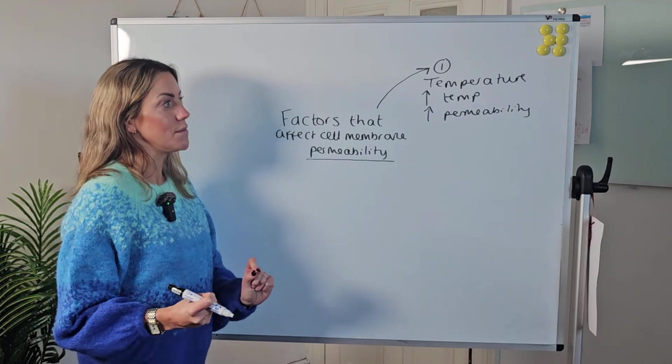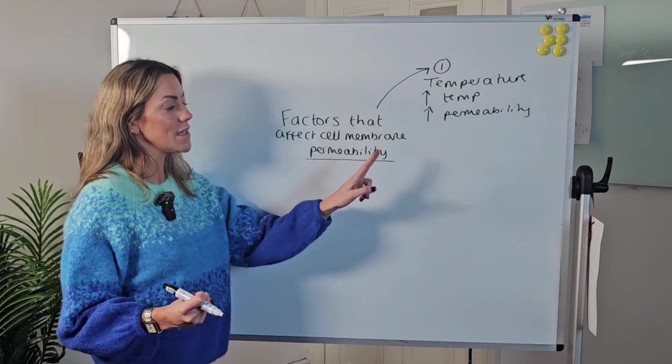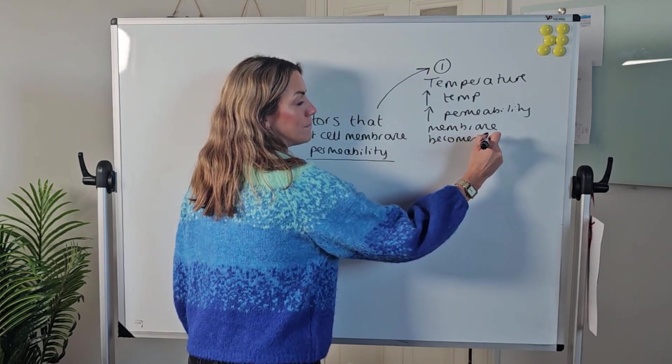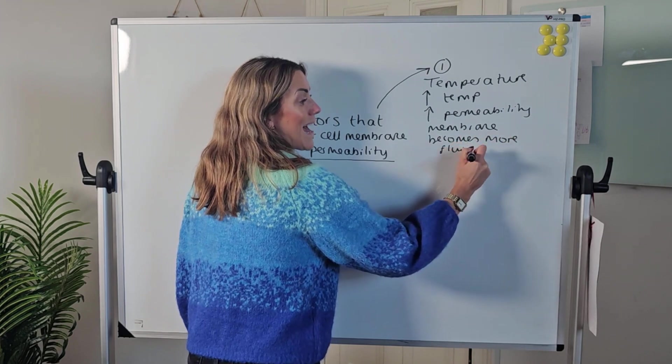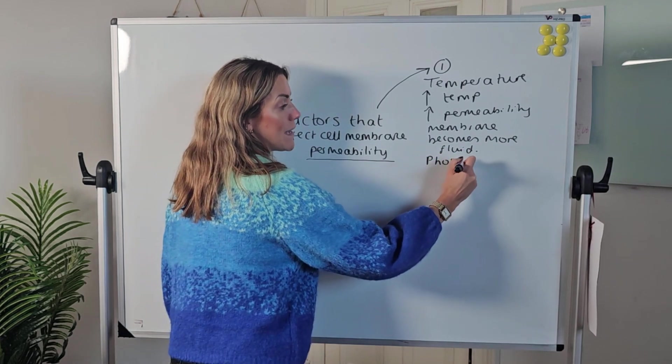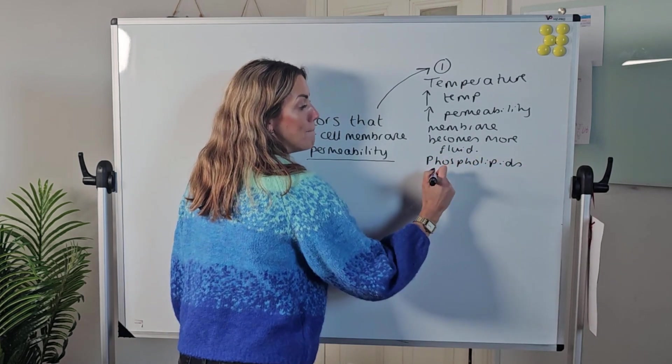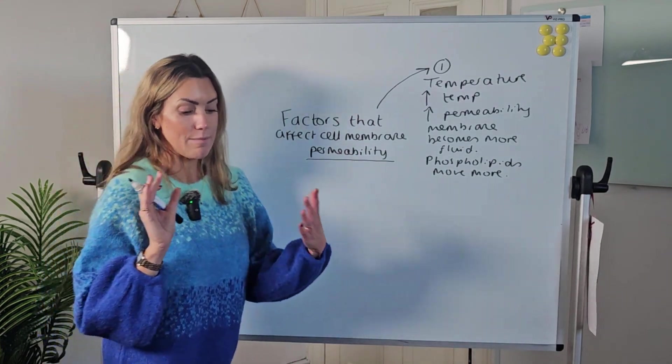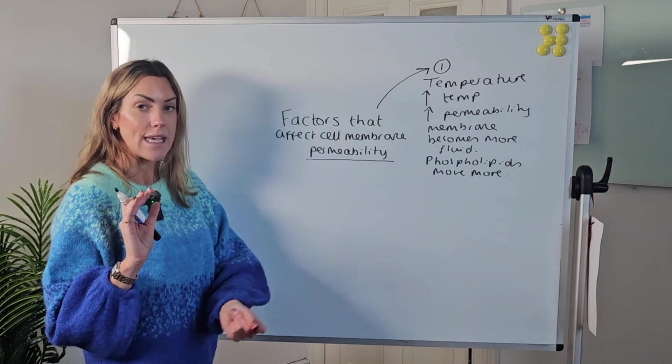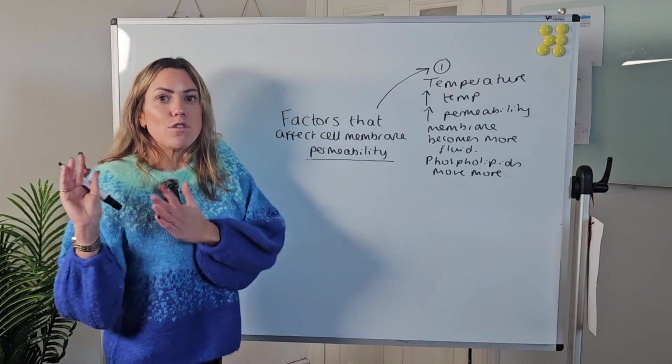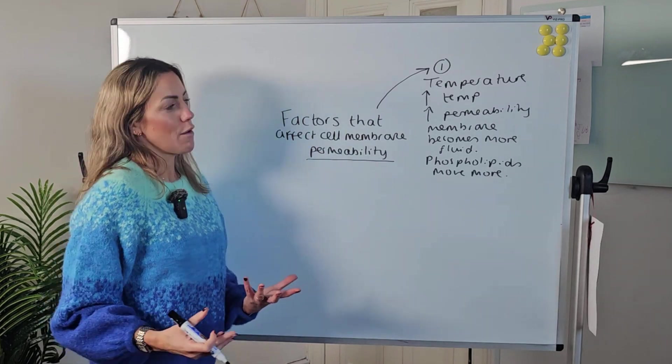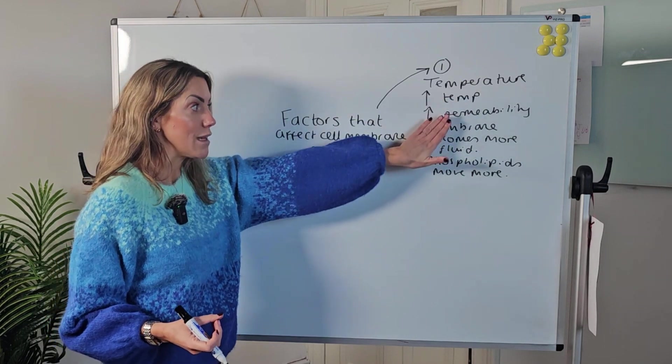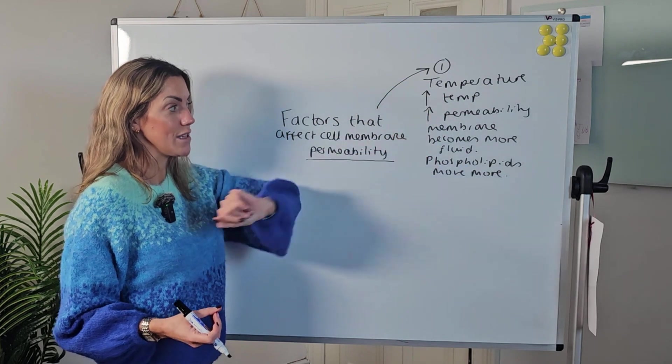If we increase the temperature, we increase the permeability because the membrane becomes more fluid, and this is because the phospholipids are going to move more. There's a warmer temperature and they have more kinetic energy. They're going to be moving laterally more, and that means you're going to get more gaps in that phospholipid bilayer. That makes the membrane more fluid overall and more permeable. So increasing the temperature increases the permeability.